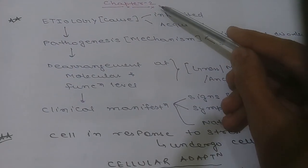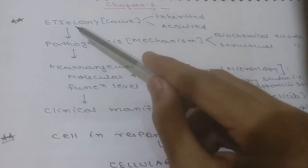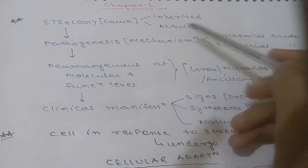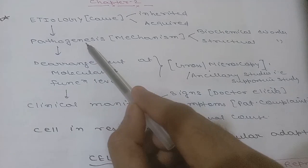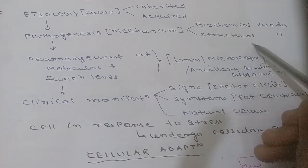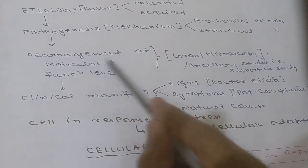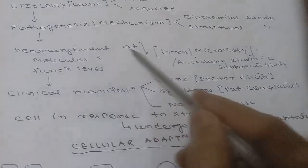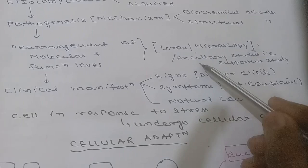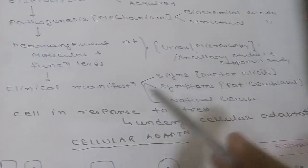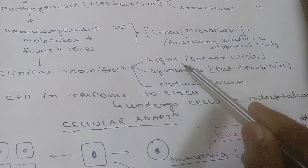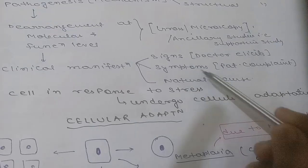We are going to start with the cell injury chapter. For any disease, we first look for etiology — the cause, whether inherited or acquired. Then we discuss pathogenesis: the mechanism, including biochemical and structural disorders. We look at molecular and functional levels, studied by gross, microscopical, or ancillary (supportive) study. Finally, we look for clinical manifestations — signs and symptoms.